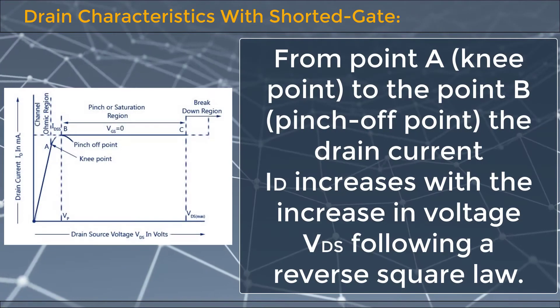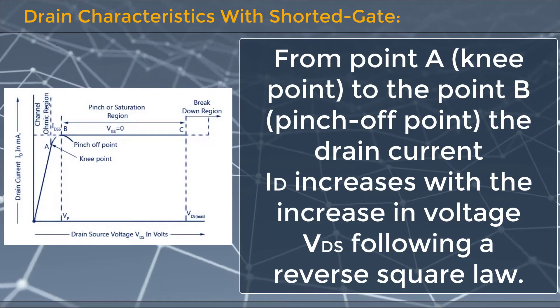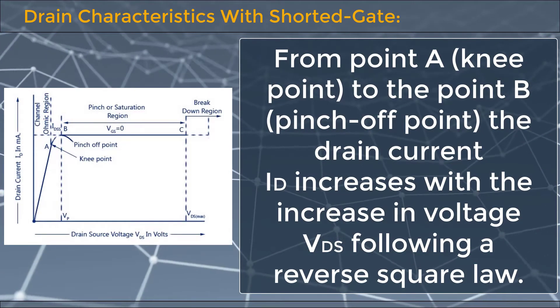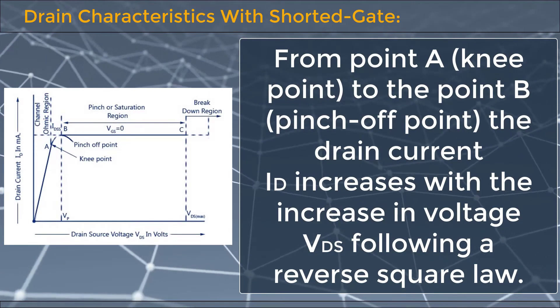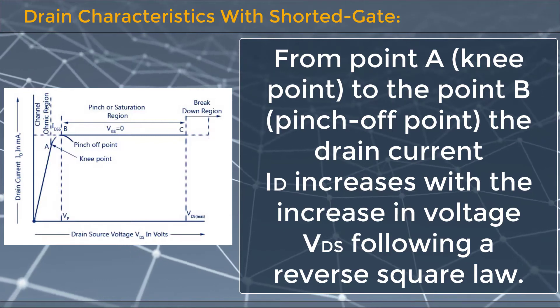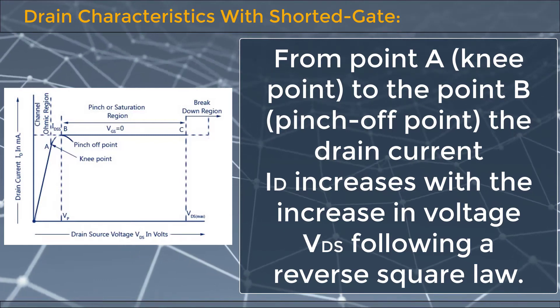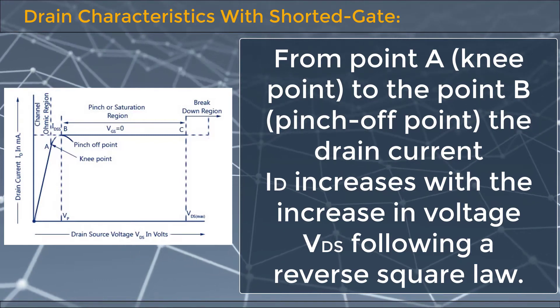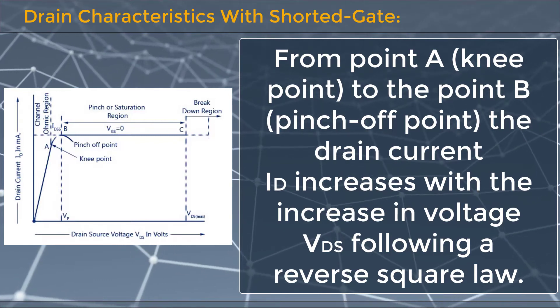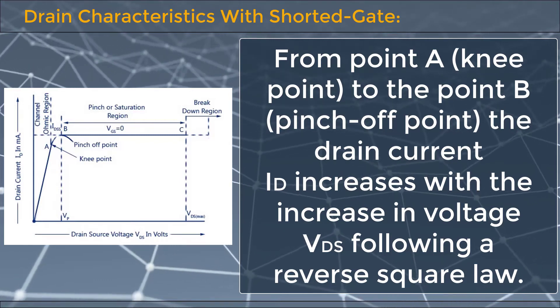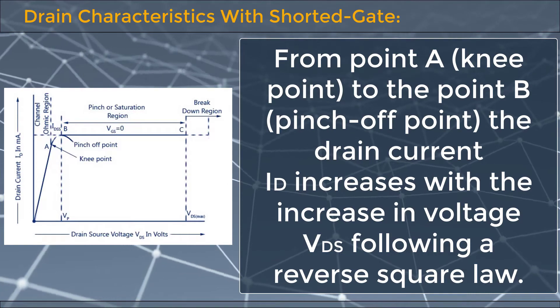From point A (knee point) to point B (pinch-off point), the drain current ID increases with the increase in voltage VDS following a reverse square law.